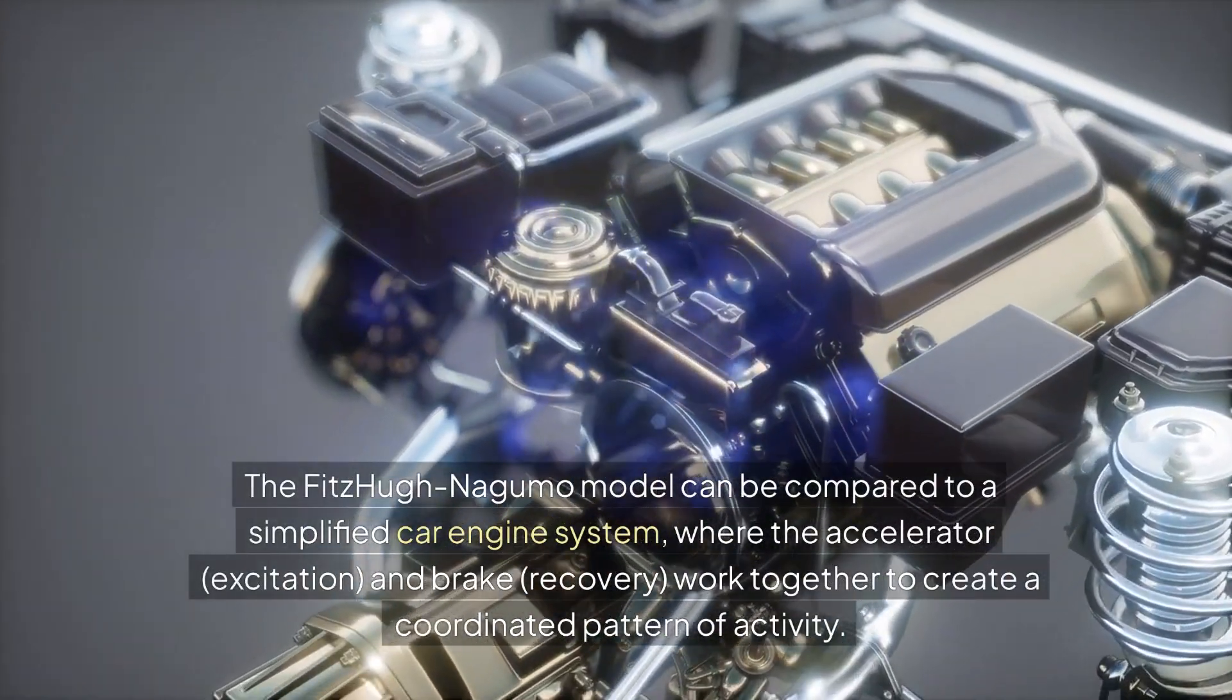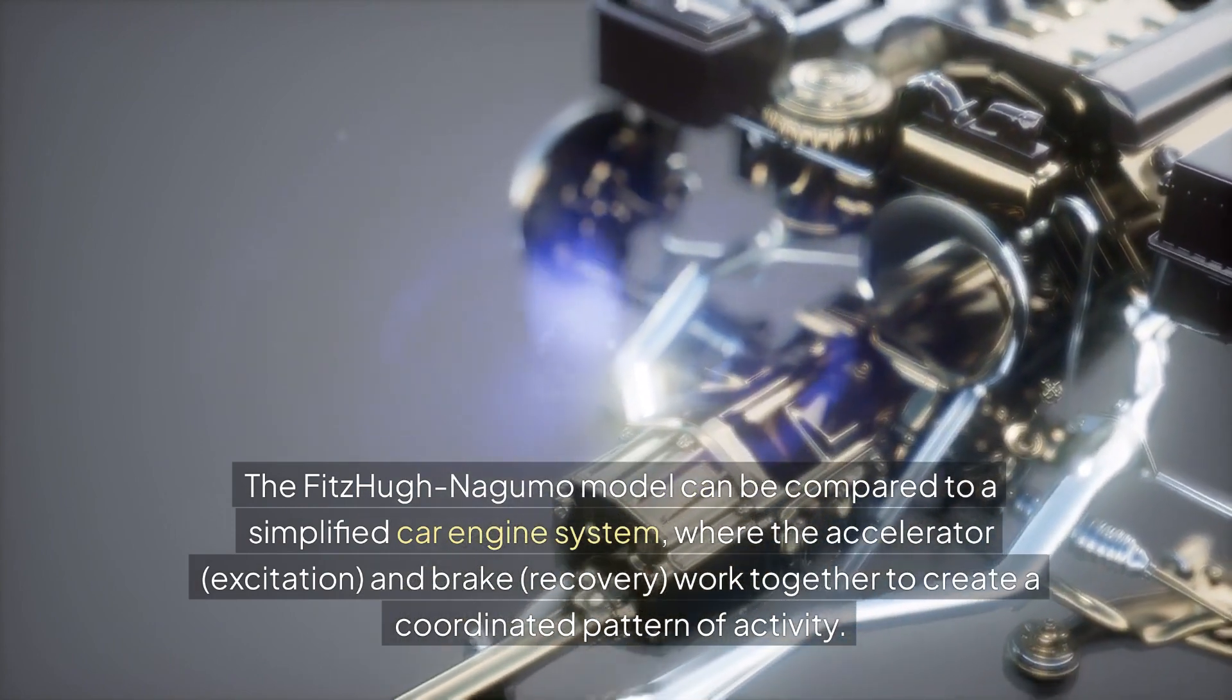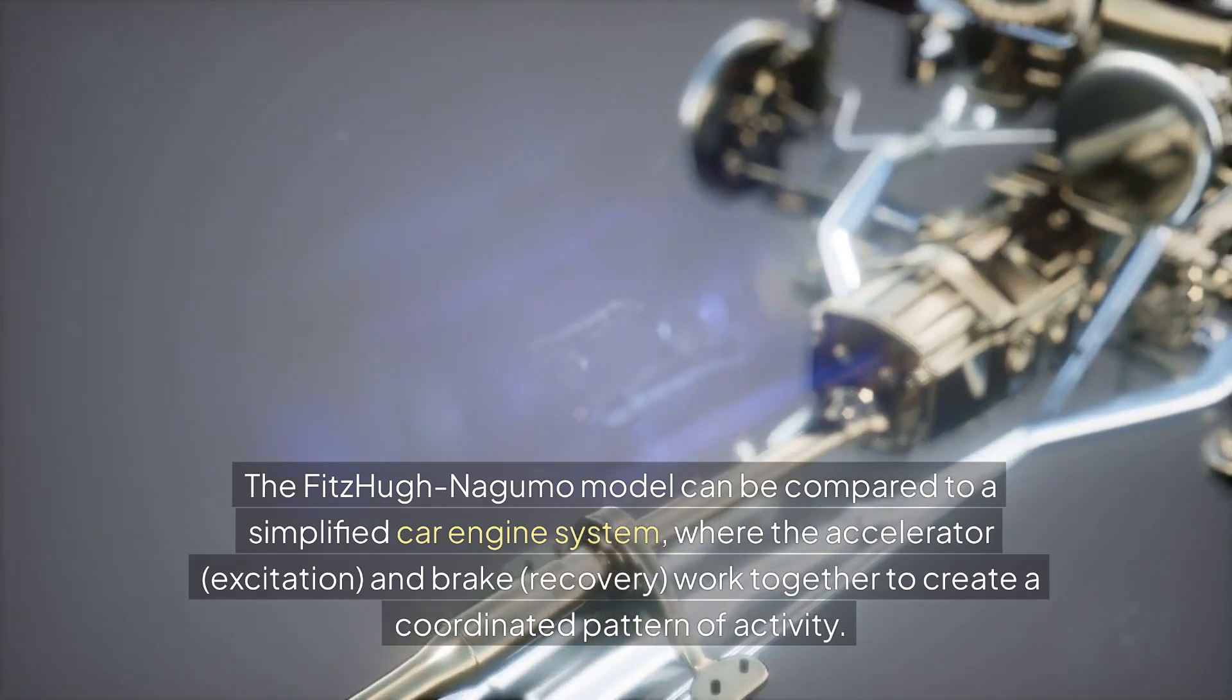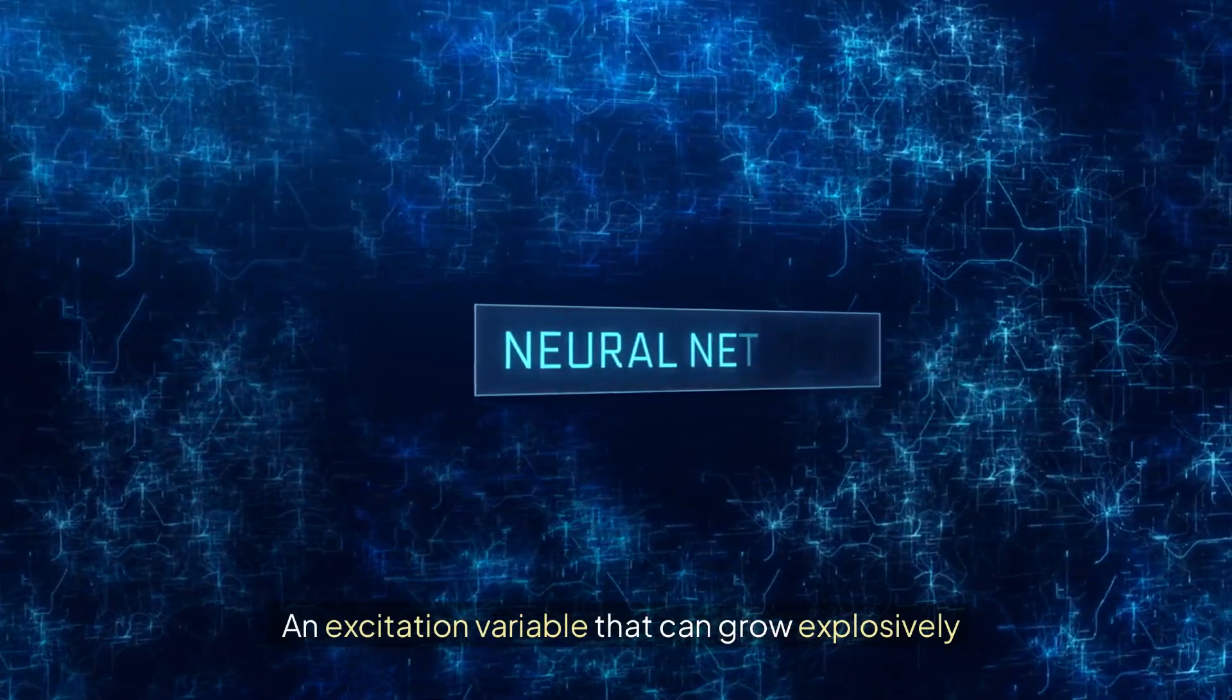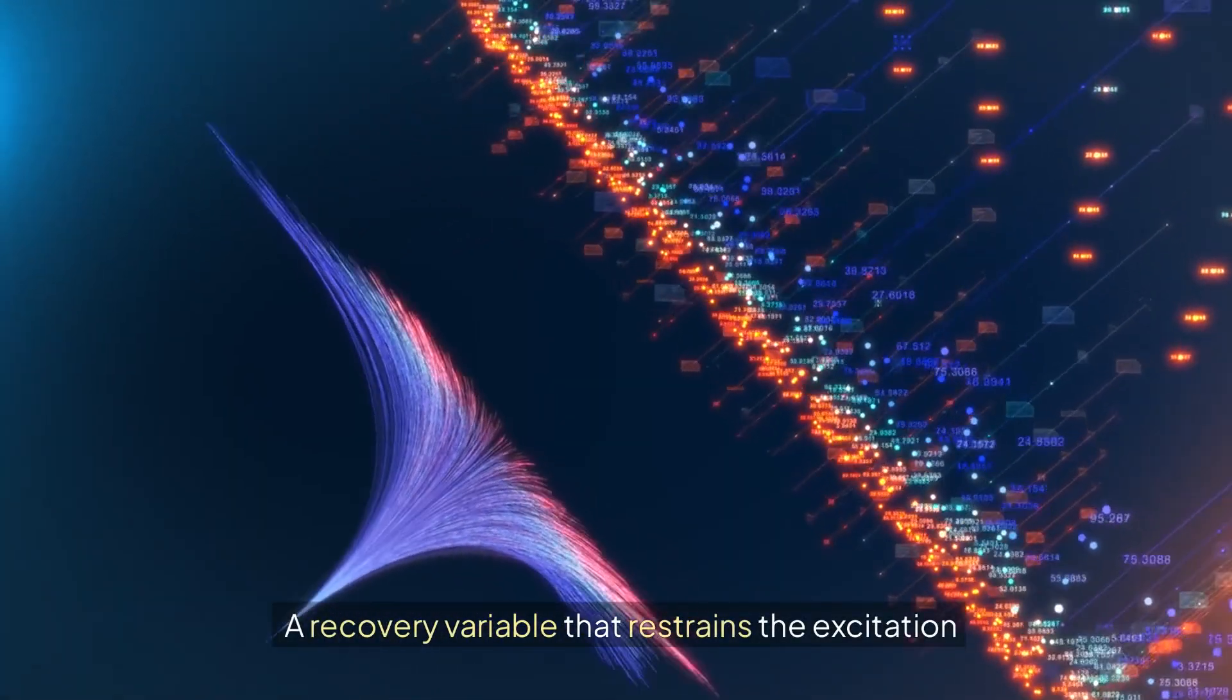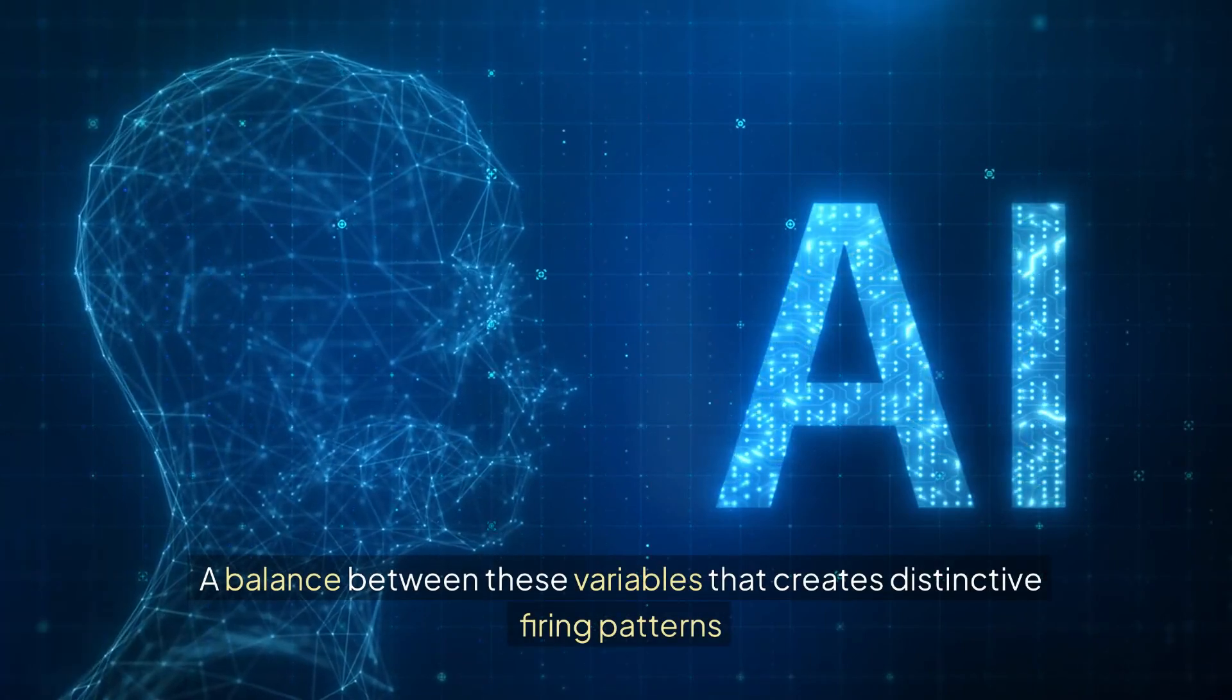FitzHugh-Nagumo model. The FitzHugh-Nagumo model can be compared to a simplified car engine system, where the accelerator (excitation) and brake (recovery) work together to create a coordinated pattern of activity. Core components: an excitation variable that can grow explosively, a recovery variable that restrains the excitation, and a balance between these variables that creates distinctive firing patterns.